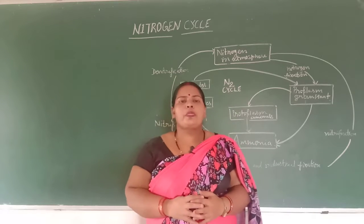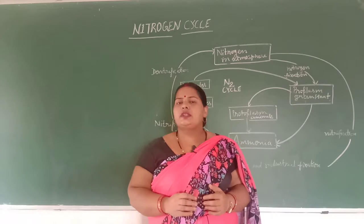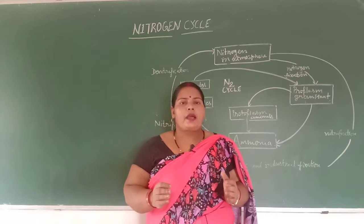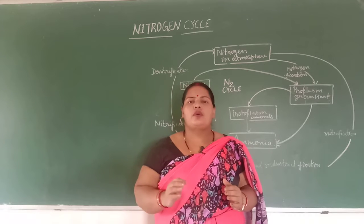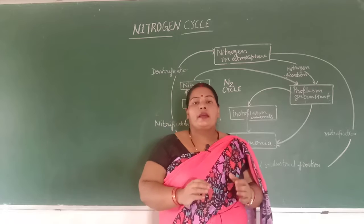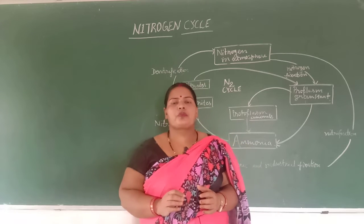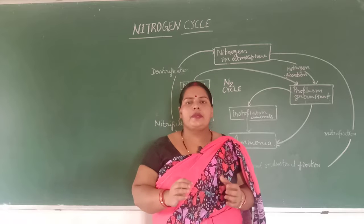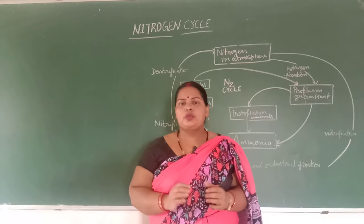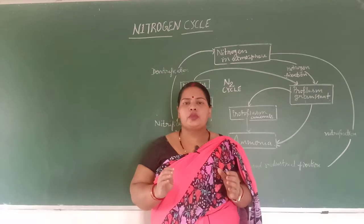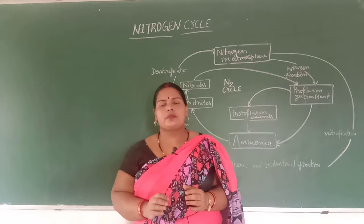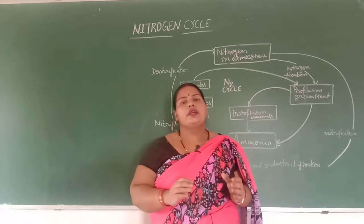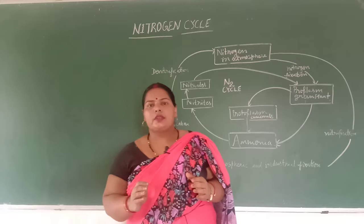Dear students, you know that 78% nitrogen is found in our environment in the gaseous form. And also you know that the gaseous form of nitrogen is not a usable form. Plants help in making it into a suitable form. The leguminous plants have nodules in their roots, and those nodules contain some micro-organisms that have the capacity to convert the atmospheric nitrogen into a usable form.